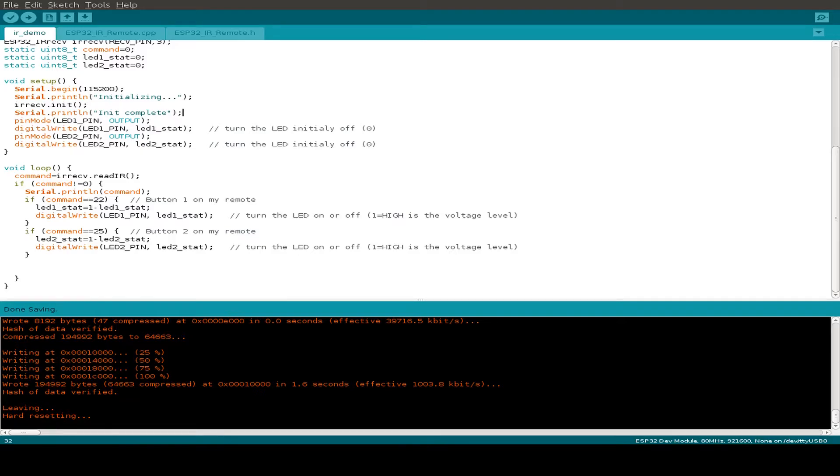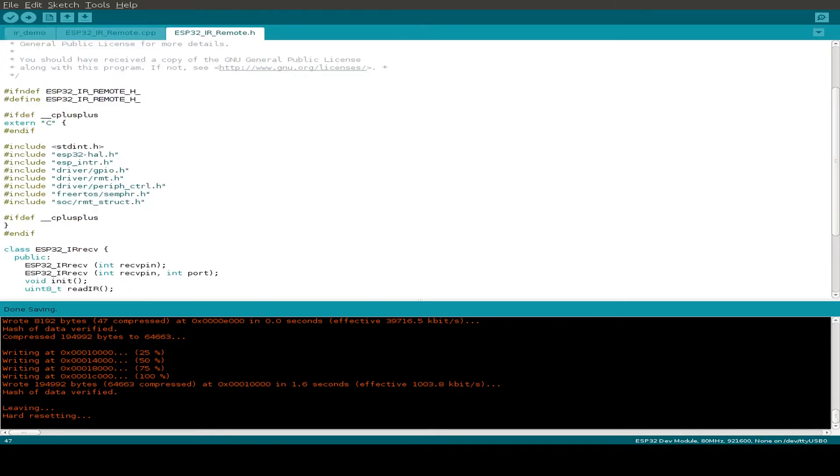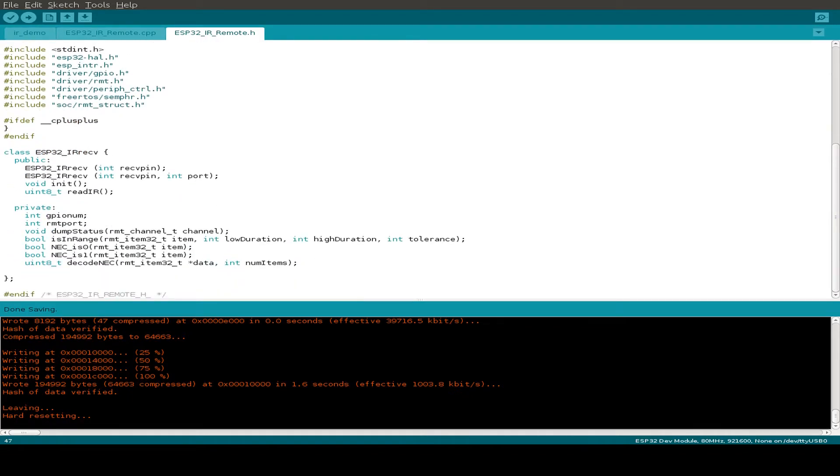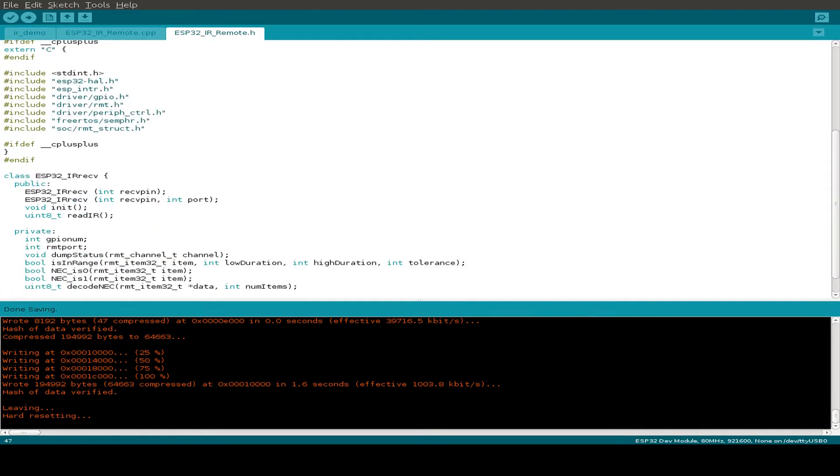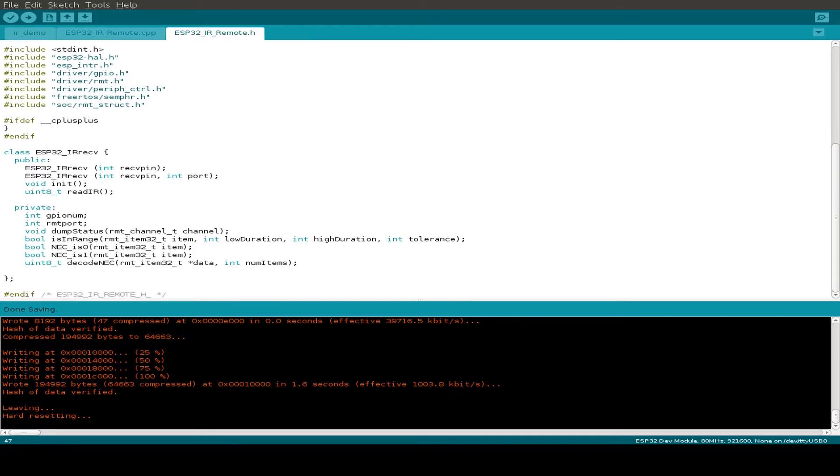If we receive a command and the command has the number 22, then we switch one LED on or off. Just have a look into the small library I've written. This is also based on the sample from Neil Colbin. We just set up some classes and we have a constructor of our class, an initializing command, and also the read command. The rest is all hidden from the user.